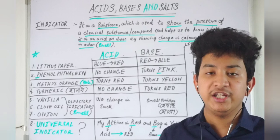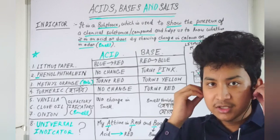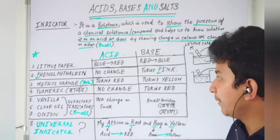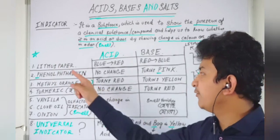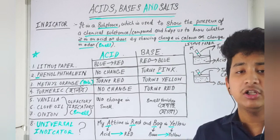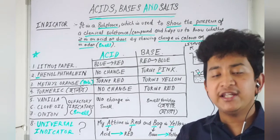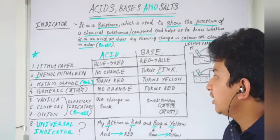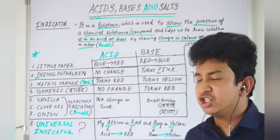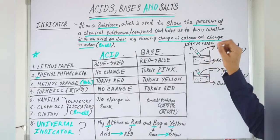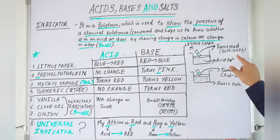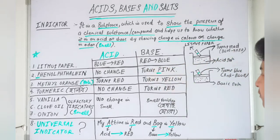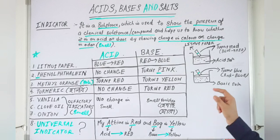The first indicator is litmus paper. Litmus paper is a paper which we get in red or blue color. If we have blue color litmus paper and we dip it in a colorless solution, we will see that the blue color litmus paper turns red.